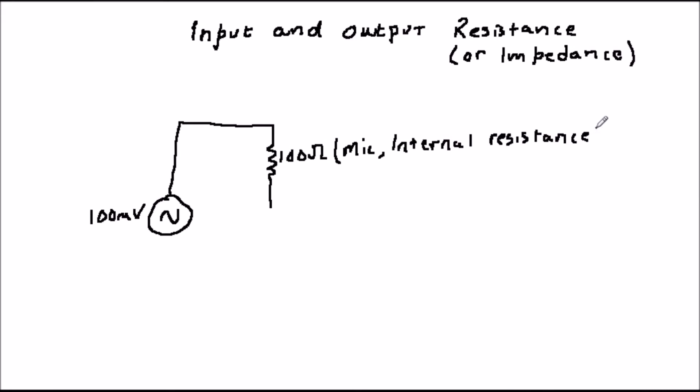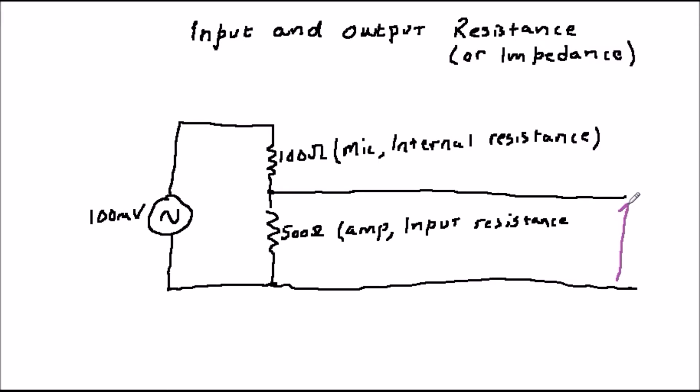Here, the input voltage to the amplifier is equal to the output voltage from the microphone times 500 over 100 plus 500. This is equal to 98 millivolts.